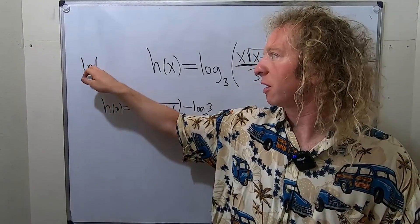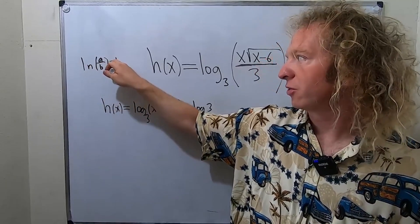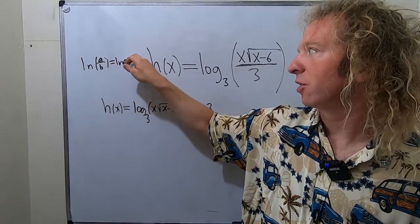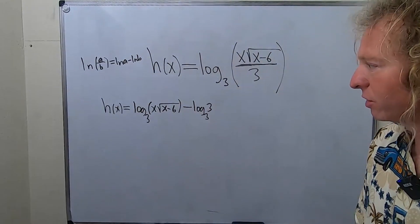If you have the natural log of a over b, that's equal to the natural log of a minus the natural log of b. Very useful property of logarithms.